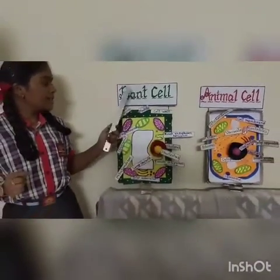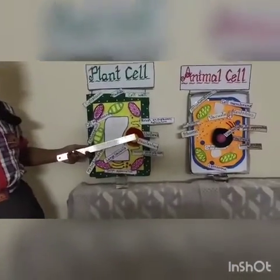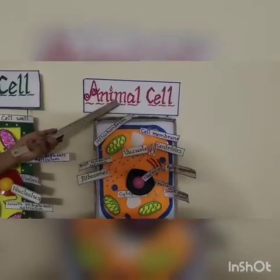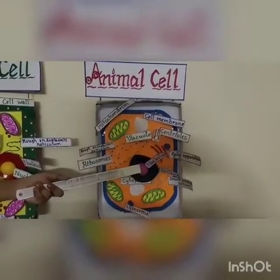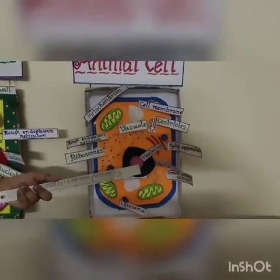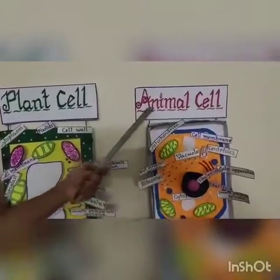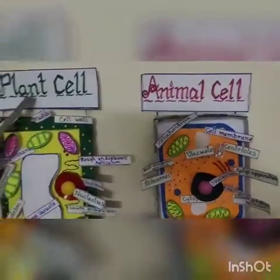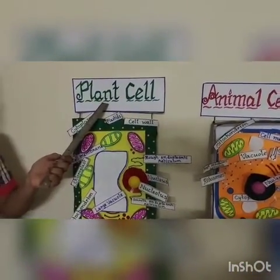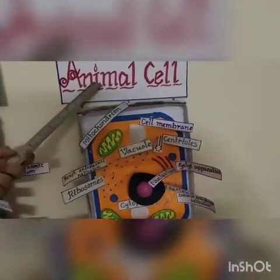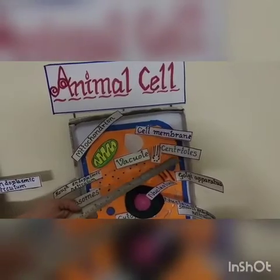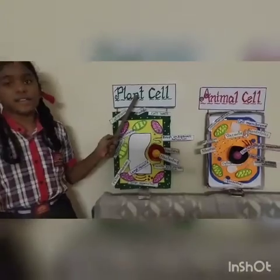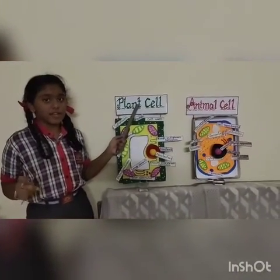In a plant cell, the nucleus is present on one side, whereas in an animal cell the nucleus is present in the center. Lysosomes are present in an animal cell whereas in a plant cell they are absent. Centrioles are present in animal cells, whereas in plants they are present only in lower or short plants.